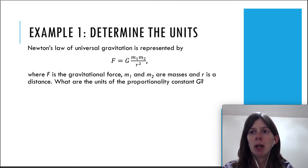First example here, we are given an equation, Newton's law of universal gravitation. We're not worried about what it means right now. We're just trying to figure out the units of G in this example. We don't know what G is, it's just a constant in here. What are the units?